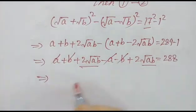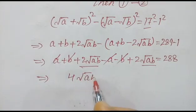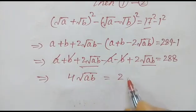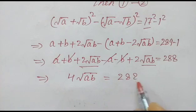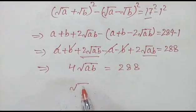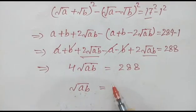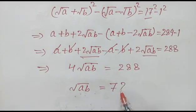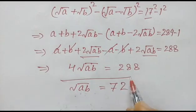The a + b and −a − b terms cancel out, leaving us with 4√(ab) equals 288. Therefore, √(ab) equals 72.